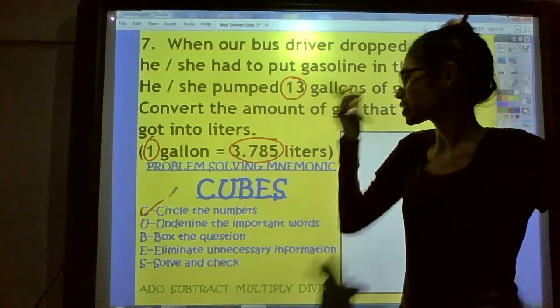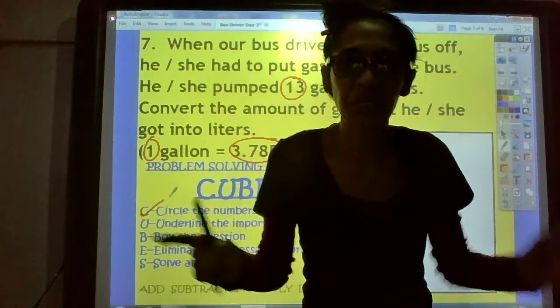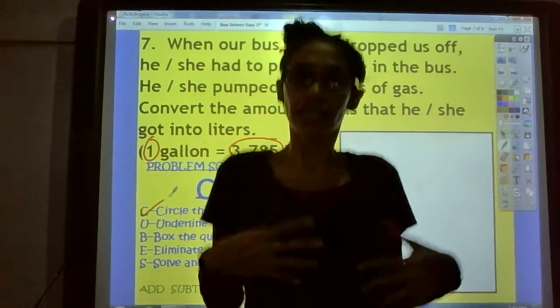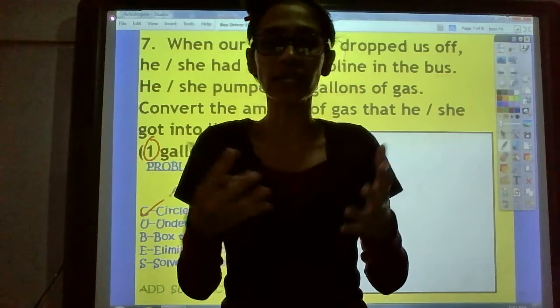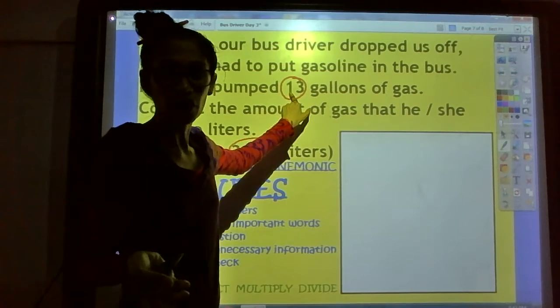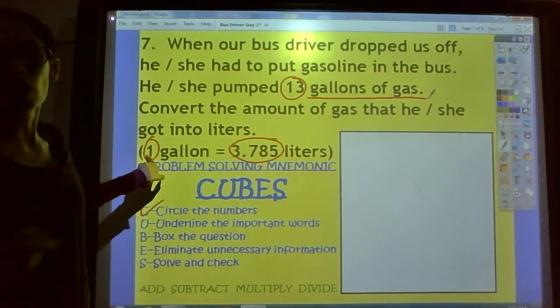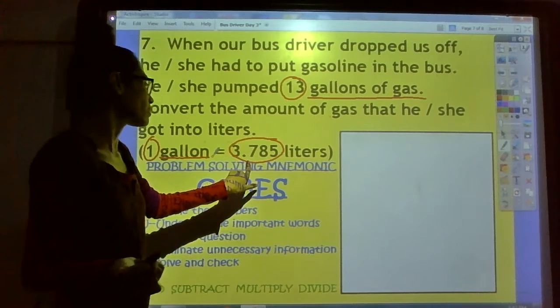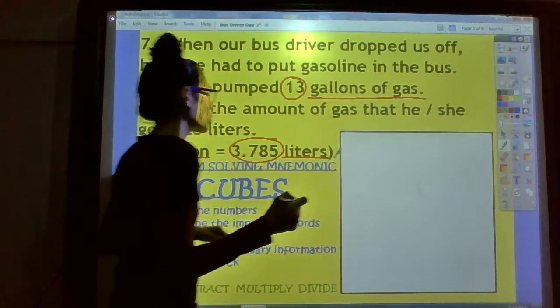The next step is to underline the important words. What words do we see? There's a lot. That's a lot of words. So, when there's a lot, we're going to calm down and we're going to breathe and we're going to take it one step at a time. So, first thing, we can underline the units that go with our numbers. 13. What unit goes with that? 13 gallons of gas. That's good. And here's our number one. And what unit goes with that? Gallon. We have this number 3.785. What's our unit with that? Liters.